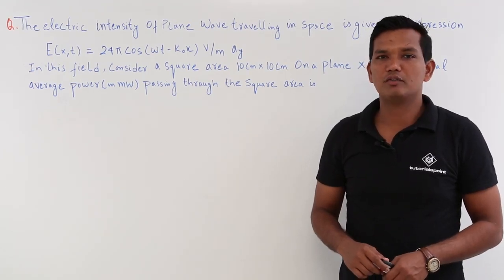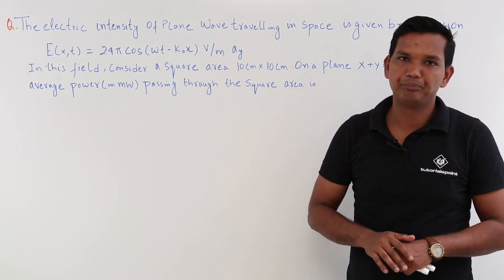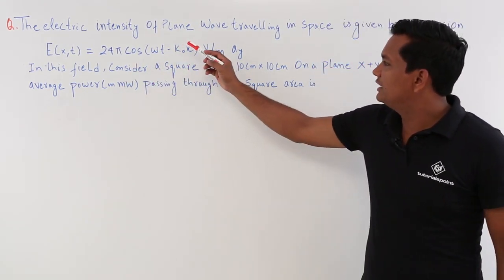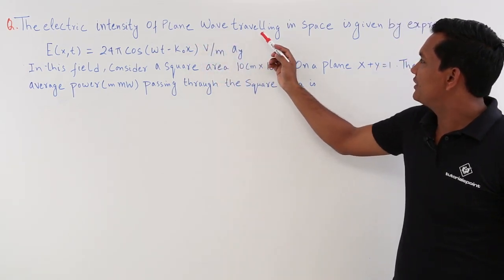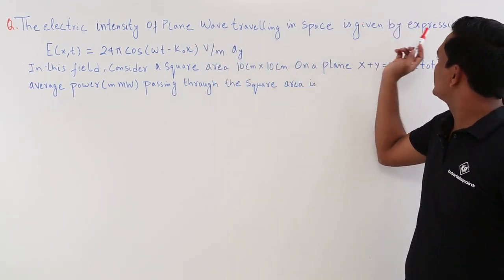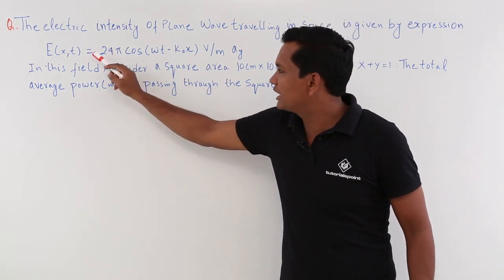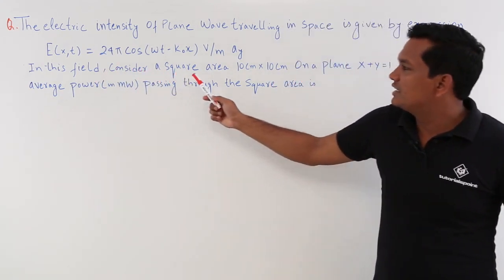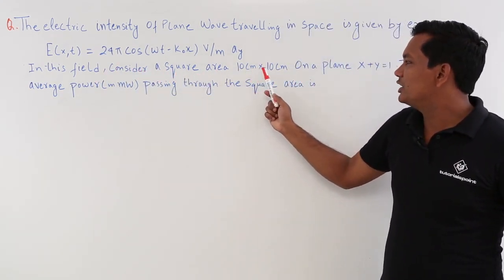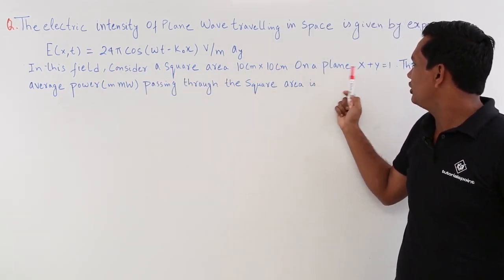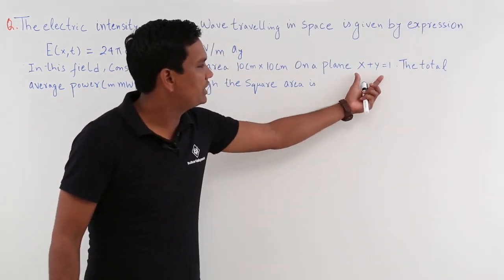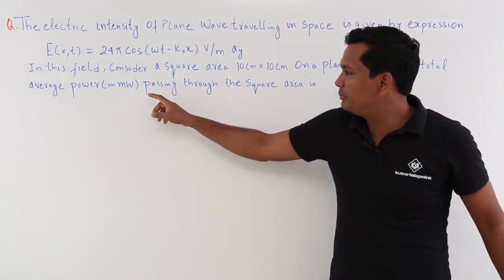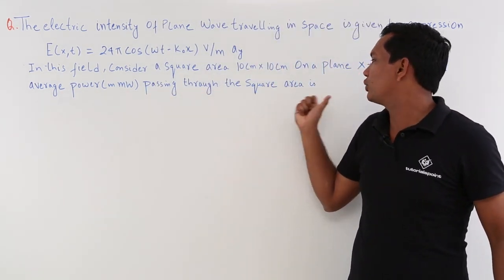In this class, we will try to solve a problem on the Poynting vector. The electric field intensity of a plane wave traveling in space is given by a certain expression — this is the electric field in space and time. Consider a square area of 10 centimeter × 10 centimeter on the plane x + y = 1, and find the total average power in milliwatts passing through that square area.